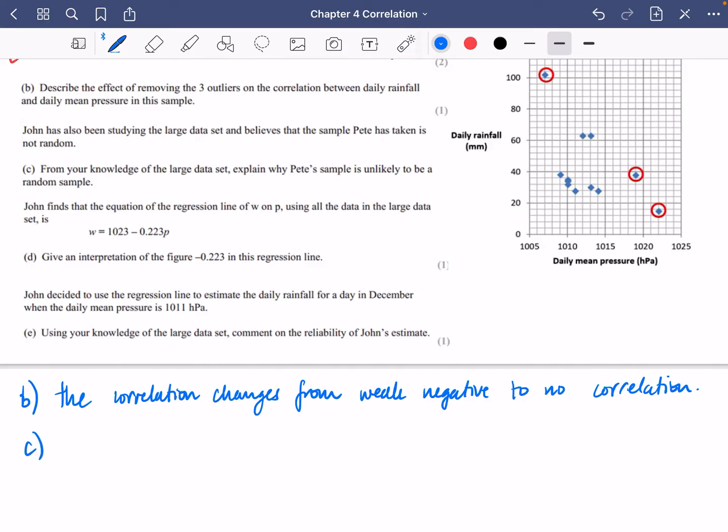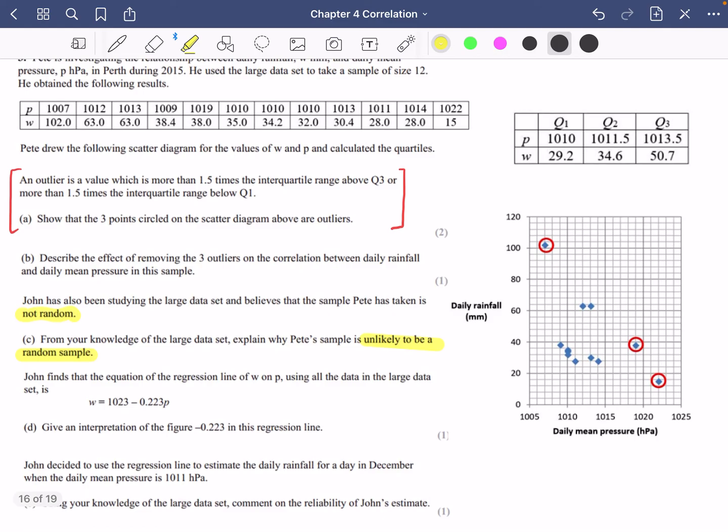It then says that John has also been studying the large data set and believes that the sample that Pete has taken is not random. From your knowledge of the large data set explain why Pete's sample is unlikely to be a random sample. Let's have a look at the things that you've got here.